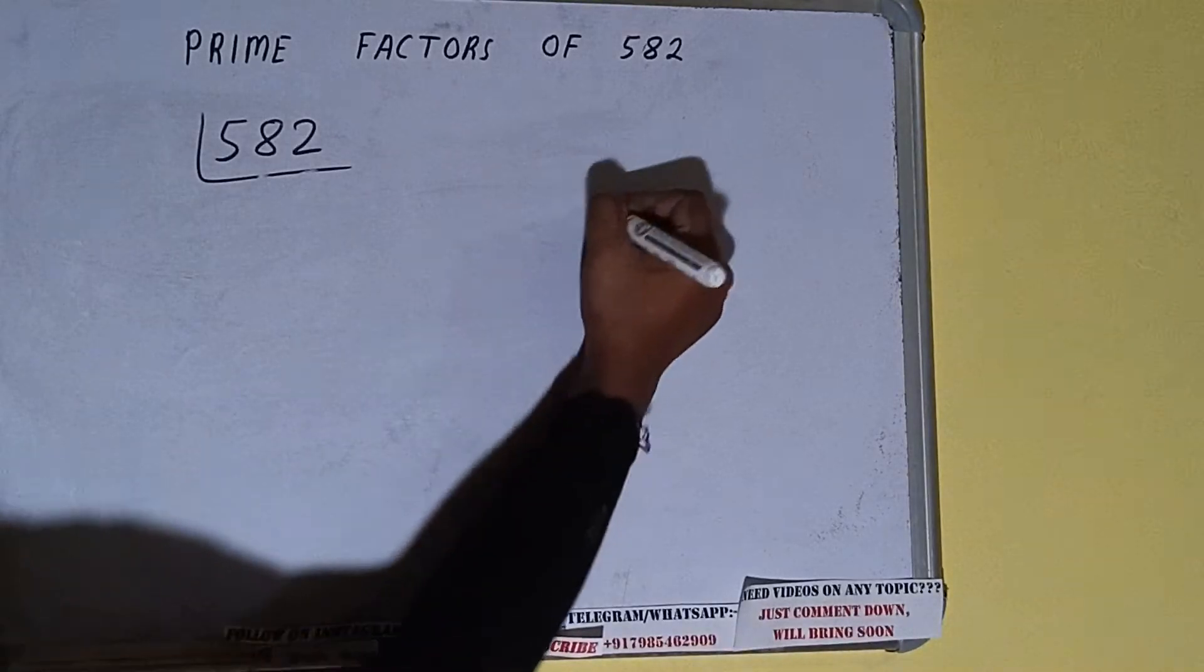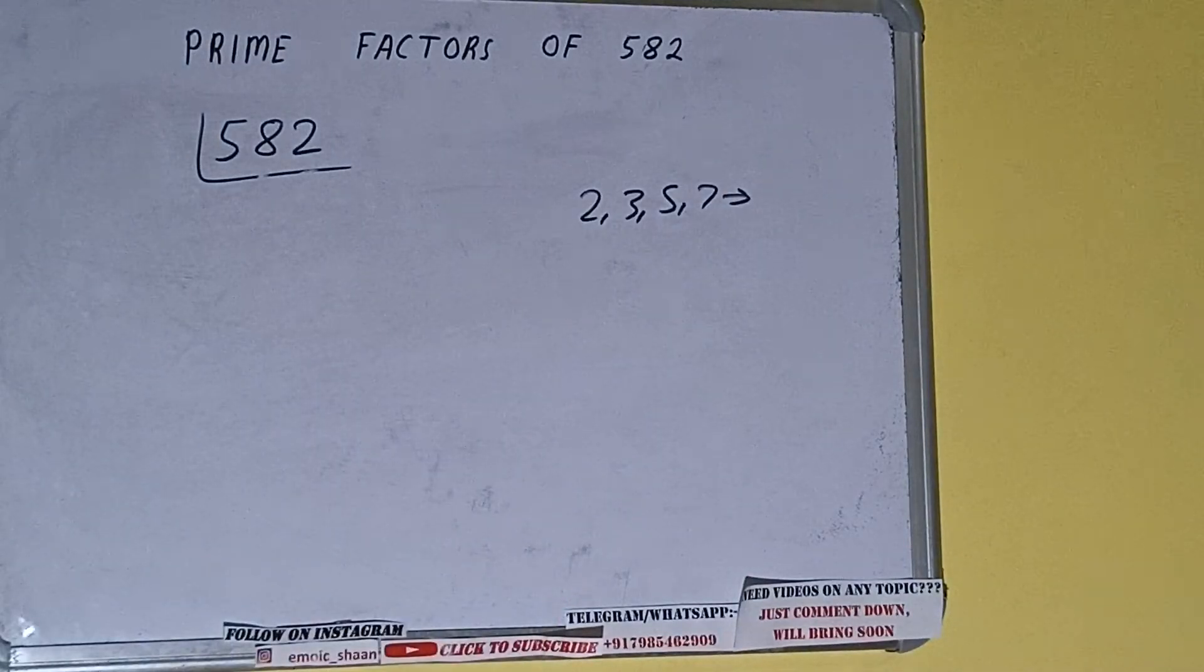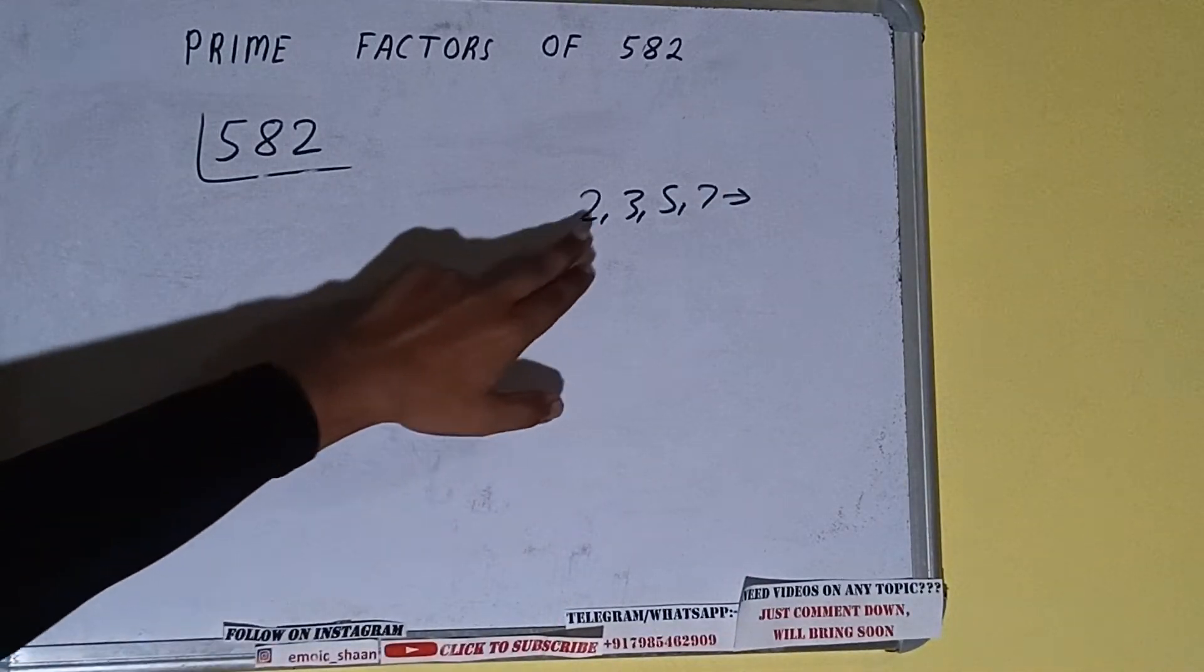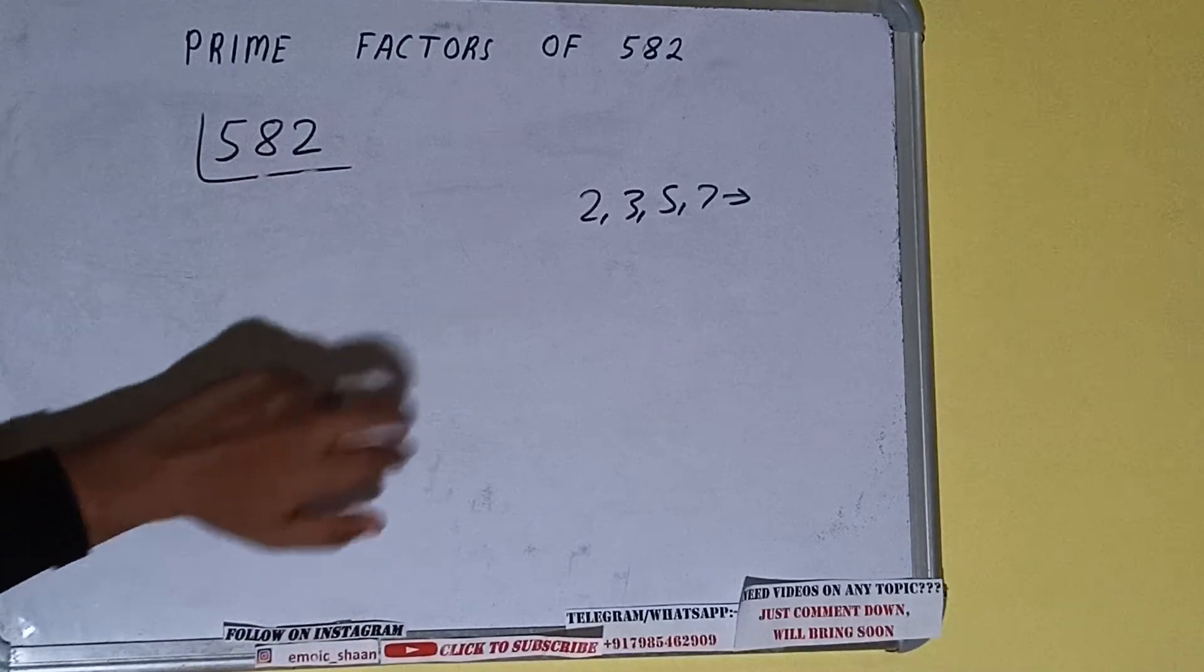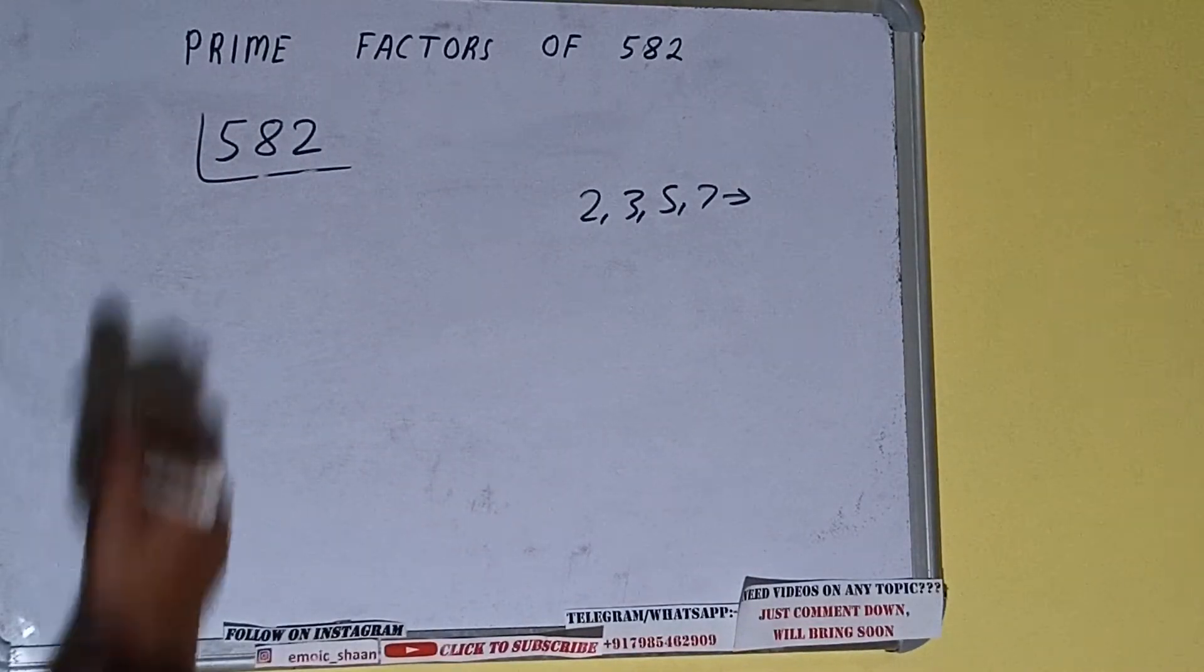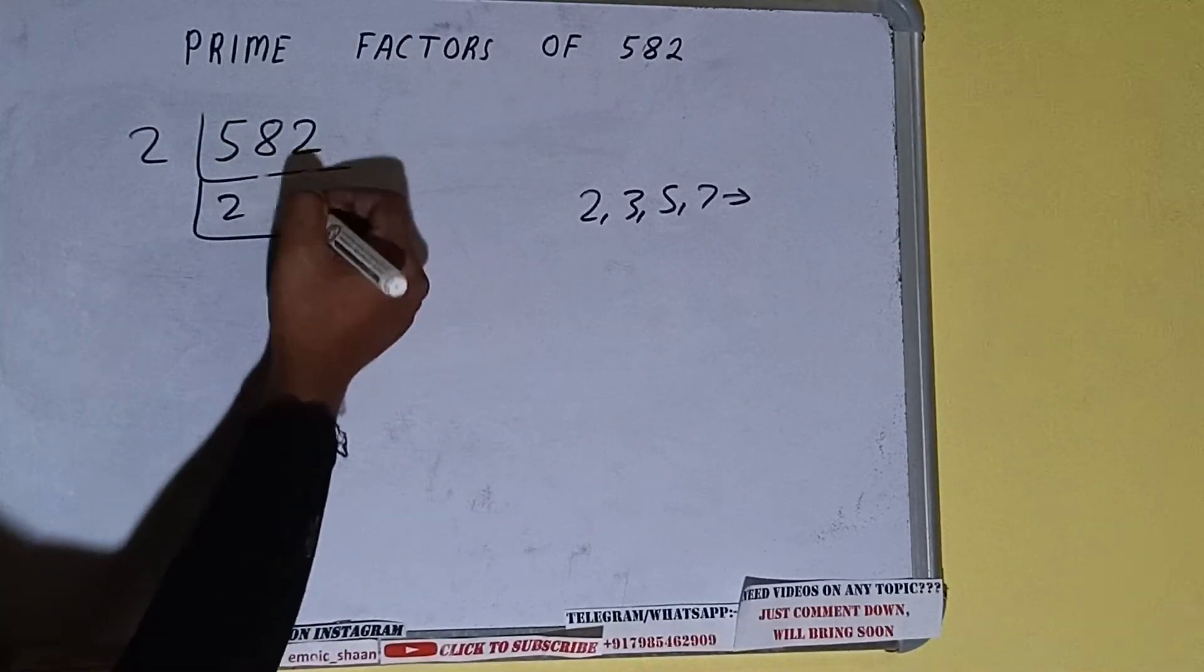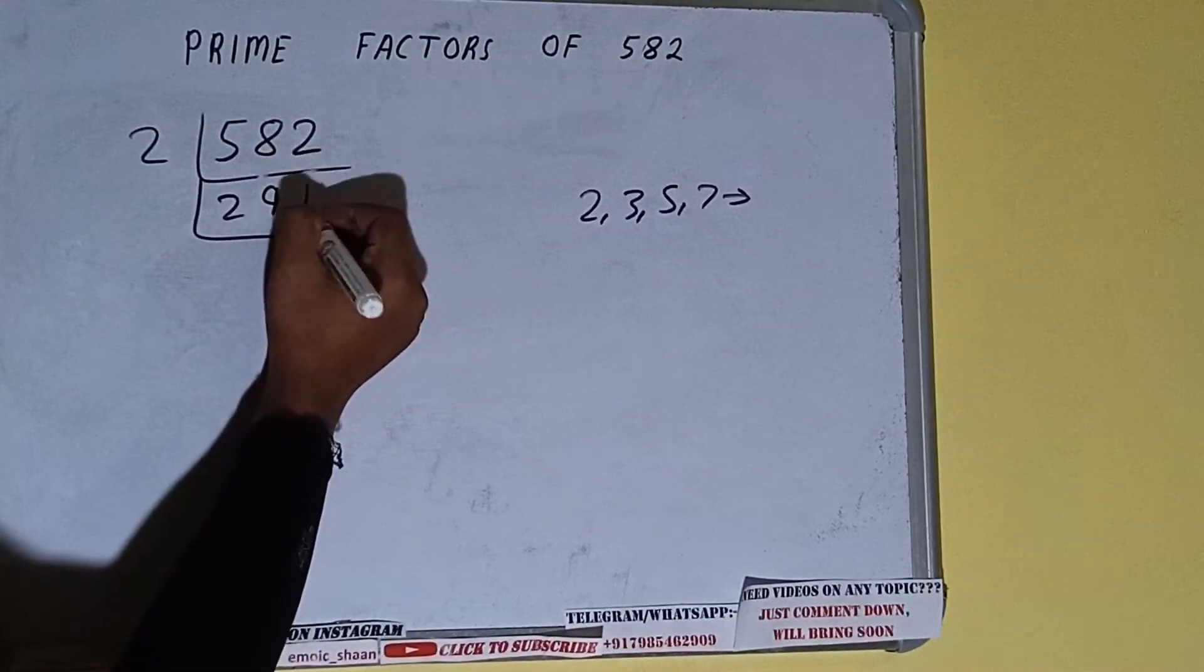All right, so we'll check with the lowest prime number we have, that is 2. Is the number 582 divisible by 2? Yes it is, because the number is even. We'll be having 2 into 582 is 291. 582 divided by 2, we get 291.